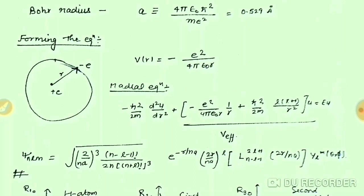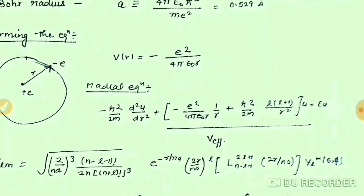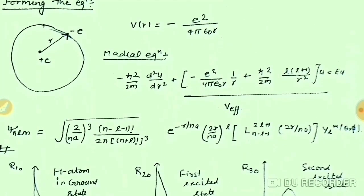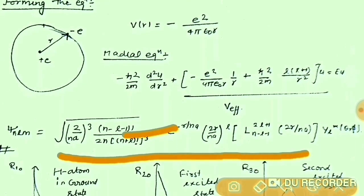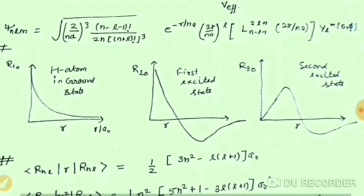The hydrogen atom is the simplest atom with only one electron. The wave function can be written — I have written it here. The radial part of this equation, the solution of which is written here in the form of psi_{n,l,m}, is the radial wave function. These are the probability plots of the wave function in the ground state, first excited state, and second excited state.